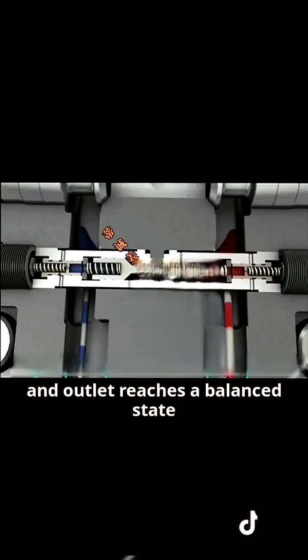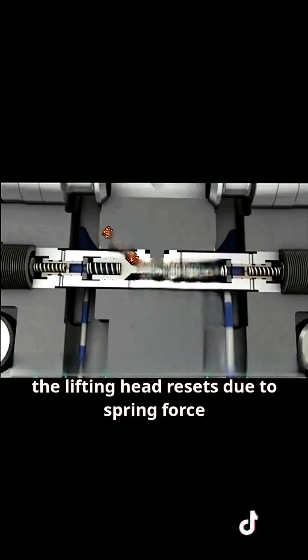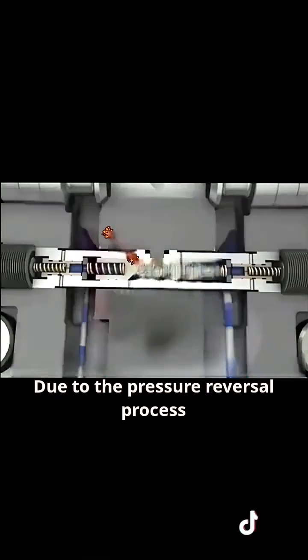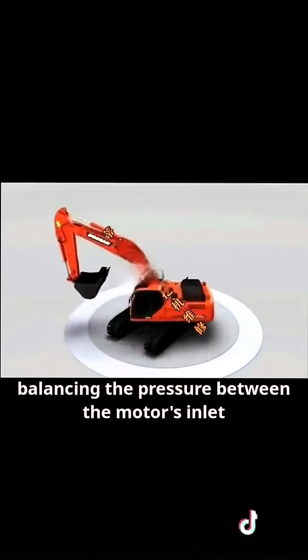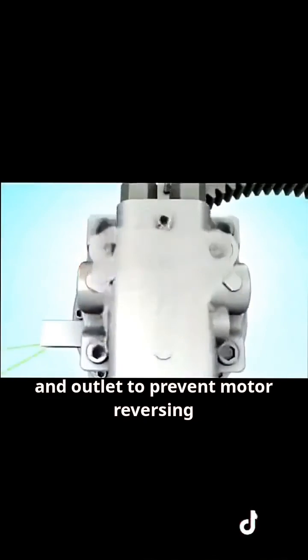When the pressure between the motor's inlet and outlet reaches a balanced state, the lifting head resets due to spring force. Due to the pressure reversal process at the oil return port, the high pressure oil flows to the oil inlet, balancing the pressure between the motor's inlet and outlet to prevent motor reversing.